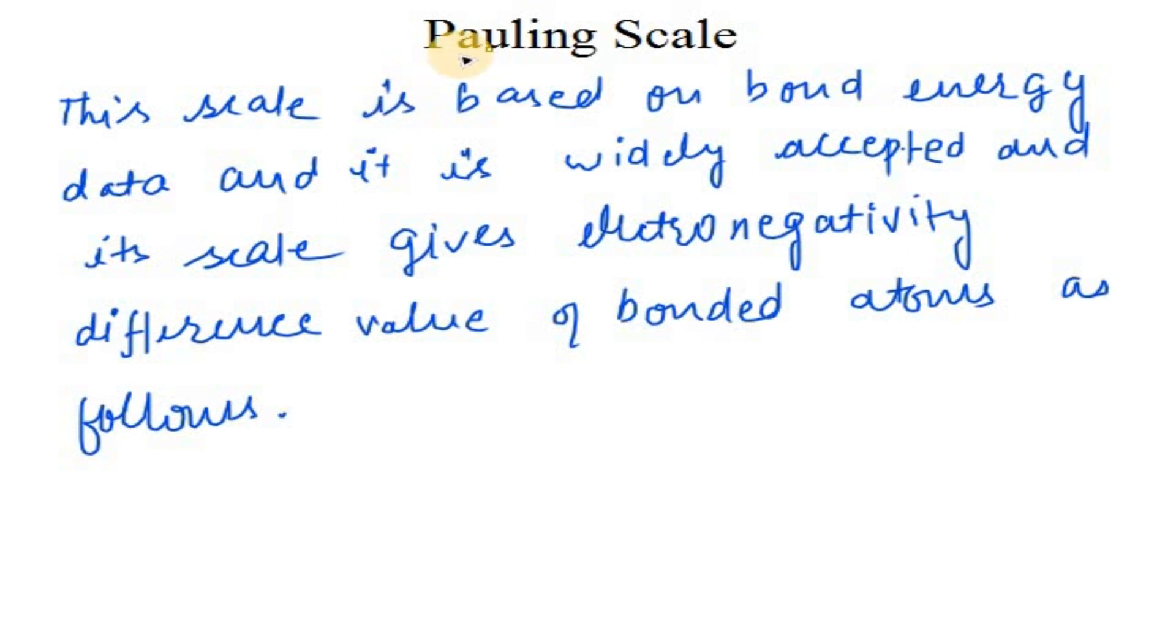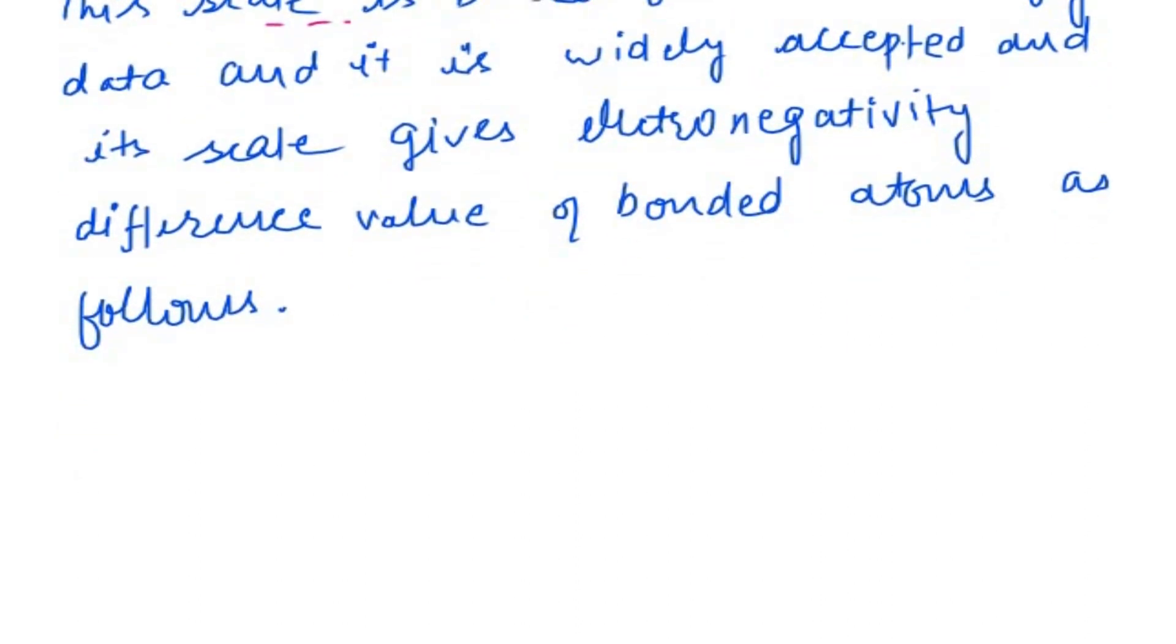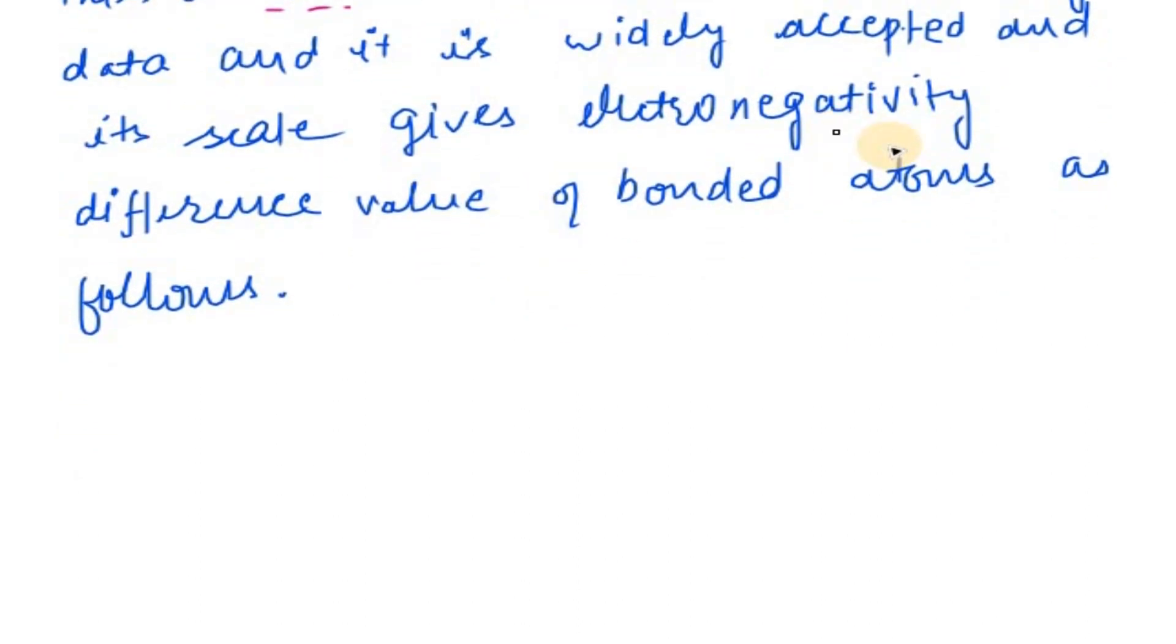So here we are going to discuss the Pauling scale, which is the scale to measure electronegativity. This scale is based on bond energy data and is widely accepted. Its scale gives the electronegativity difference value of bonded atoms.